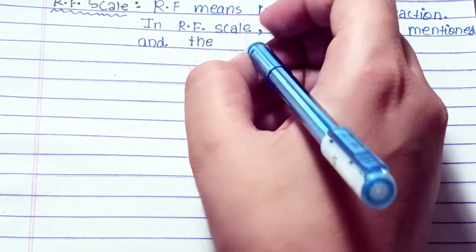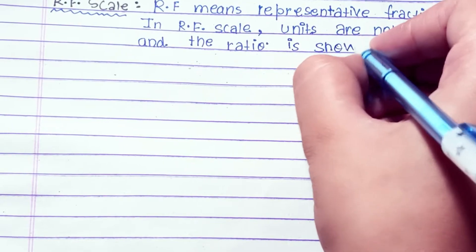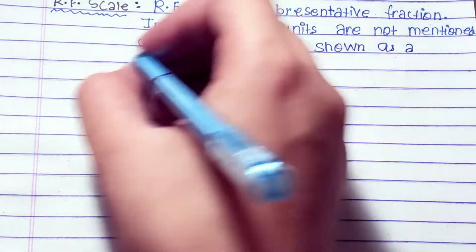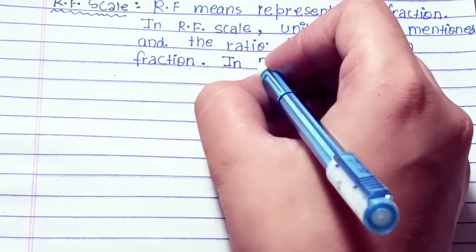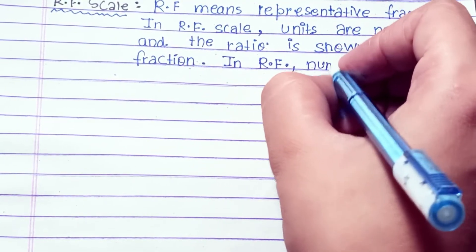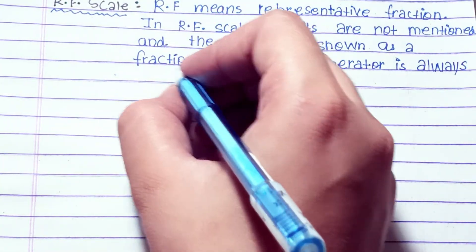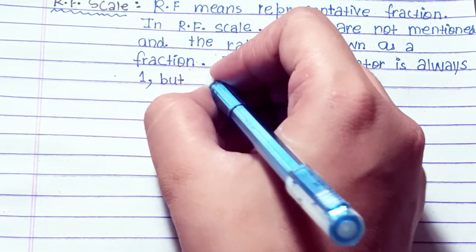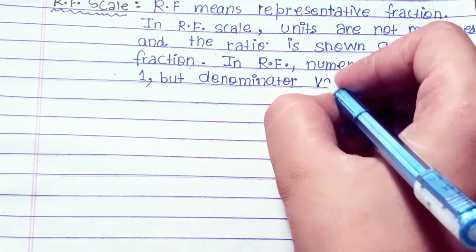R.F. scale. R.F. means representative fraction. In R.F. scale, units are not mentioned, and the ratio is shown as a fraction. In R.F., numerator is always one, but denominator varies with the size of the map.